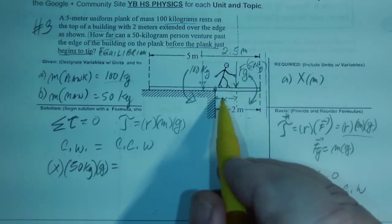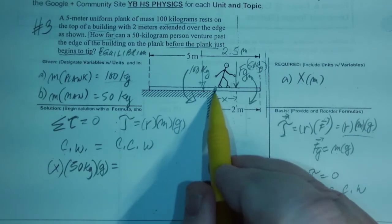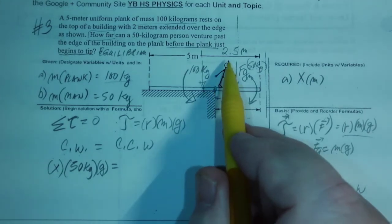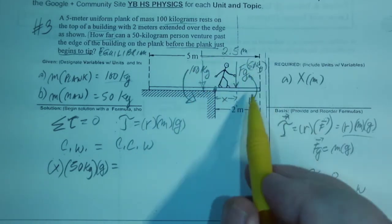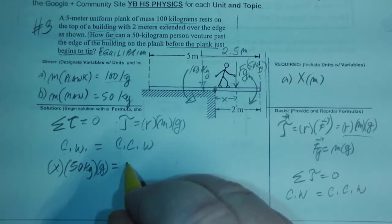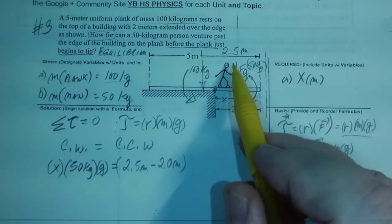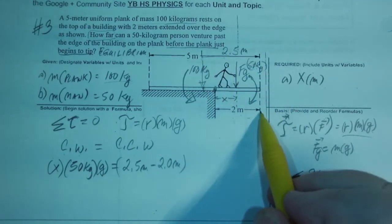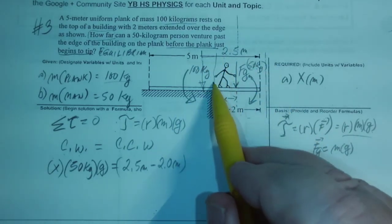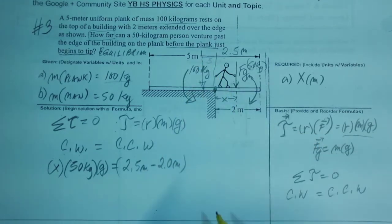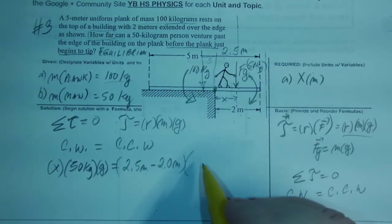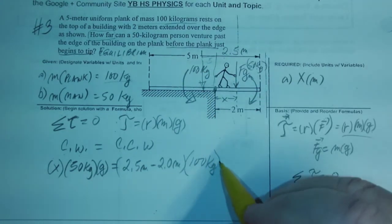So the distance from here to here, we don't know, but it is this length minus that one, so 2.5 meters minus 2.0 meters. Because look, this is 2.5, this is 2, so this part here is 0.5. And the weight is 100 kilograms, I mean that's the mass, times g.